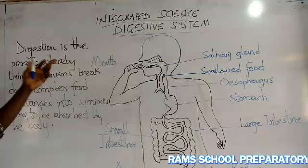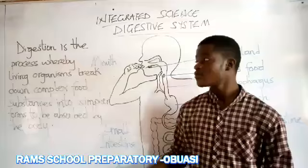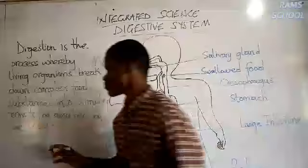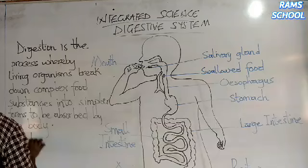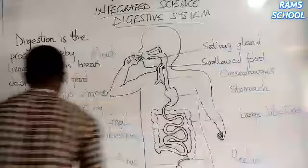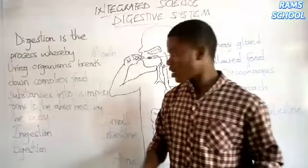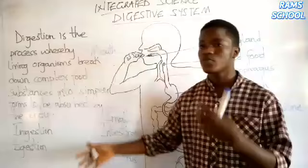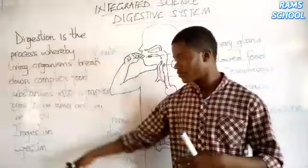Digestion is the process whereby living organisms break down complex food substances into simpler forms to be absorbed by the body. There are two terminologies which come under digestion: ingestion and egestion. Ingestion is the process of putting food in your mouth, and egestion is the process of removing undigested food substances from the body. Egestion is closely related to excretion.